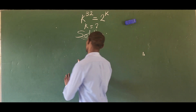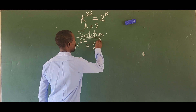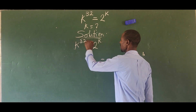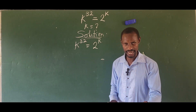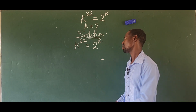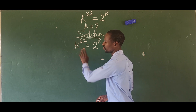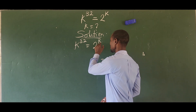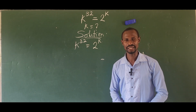So what is the method? We have k to the power of 32 equal to 2 to the power of k. We just have to eliminate this power here — in other words, we want all the variables to be on one side and all the constants on another side. So to eliminate 32 as a power, we raise this part of the equation to 1 over 32. And to eliminate this k, we raise this to the power of 1 over k.